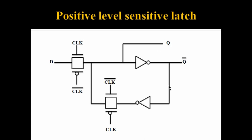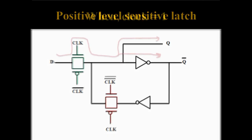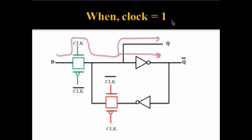So now let's see the internal structure of a positive level sensitive latch. It consists of two transmission gates and two inverters. When the clock is high, the NMOS will be on, and since this is clock-bar, the PMOS will also be on — so this whole transmission gate will be on when the clock is high, while the other transmission gate will be off. When the clock is high, the latch becomes transparent and the output exactly follows the data, as we just saw in the waveform.